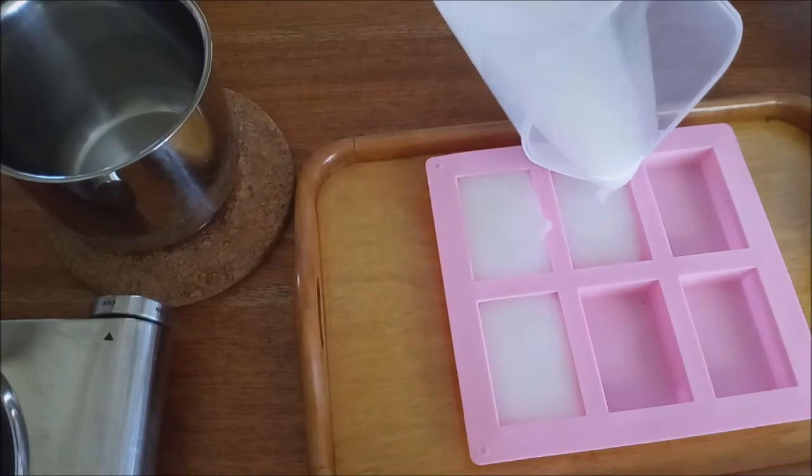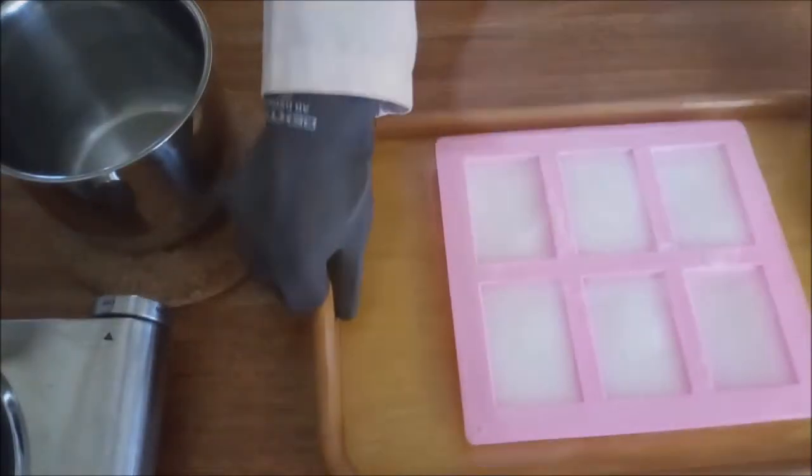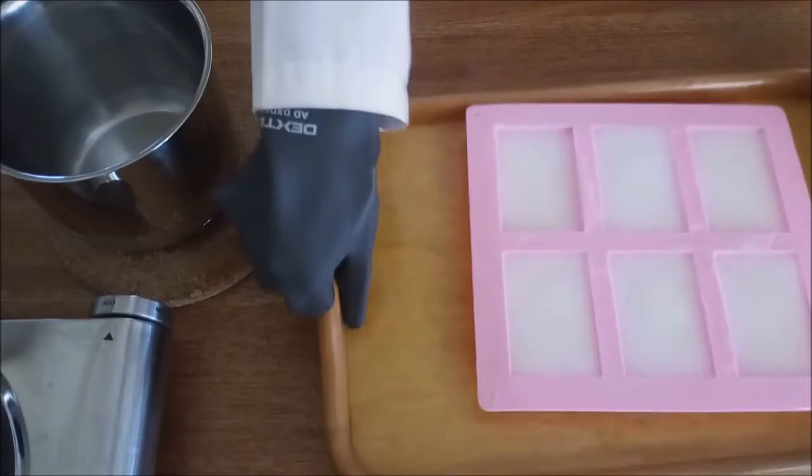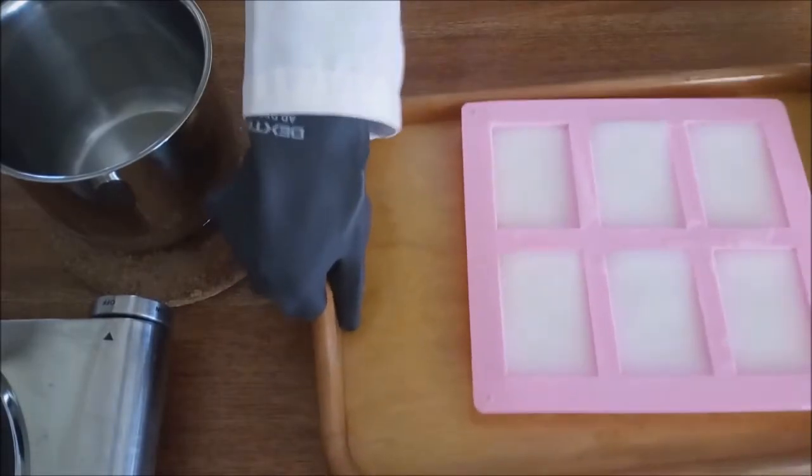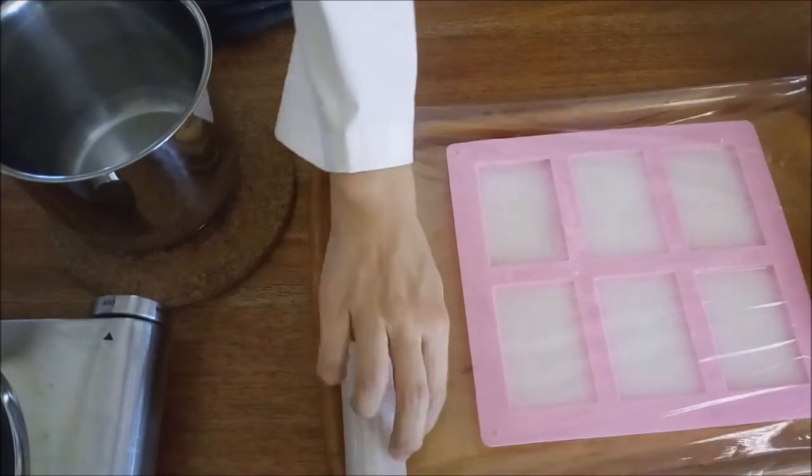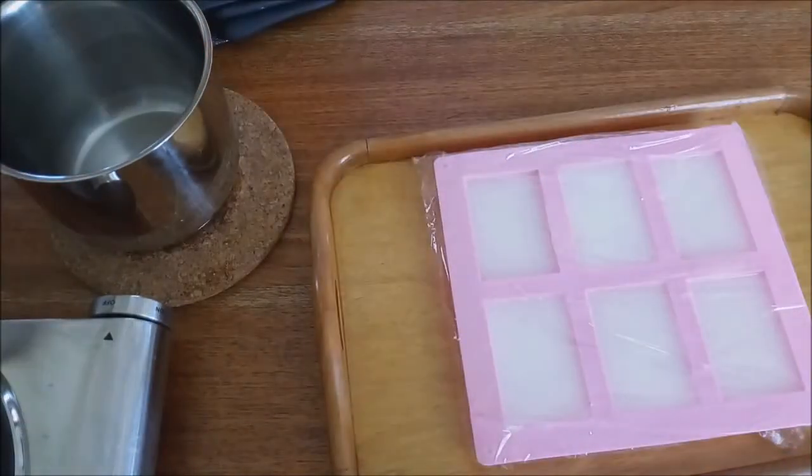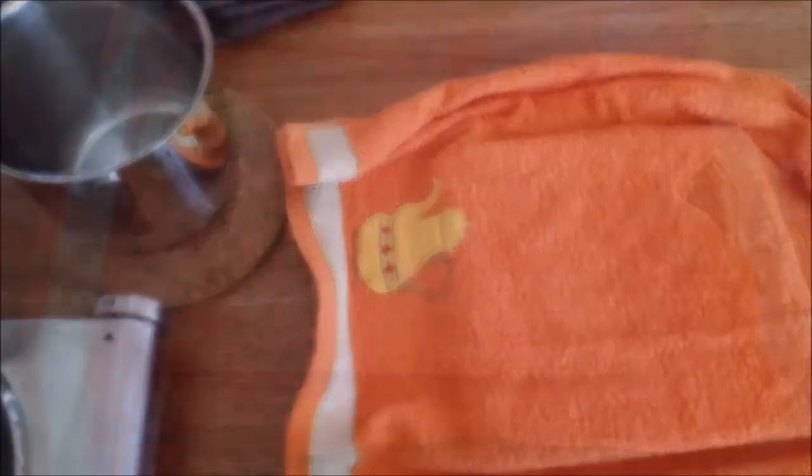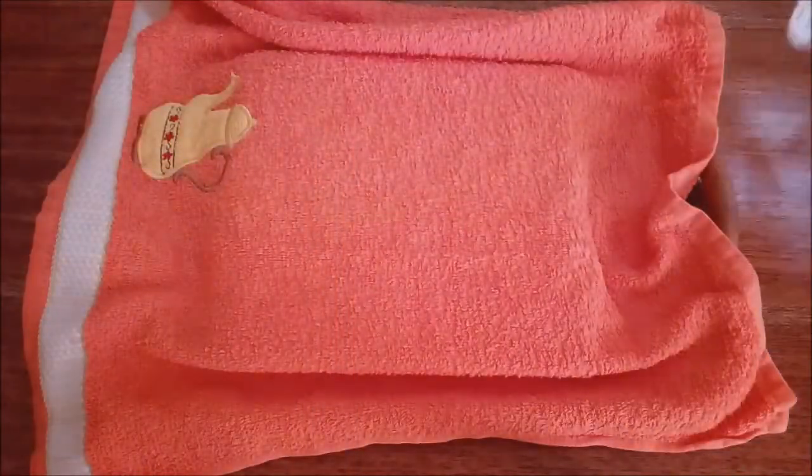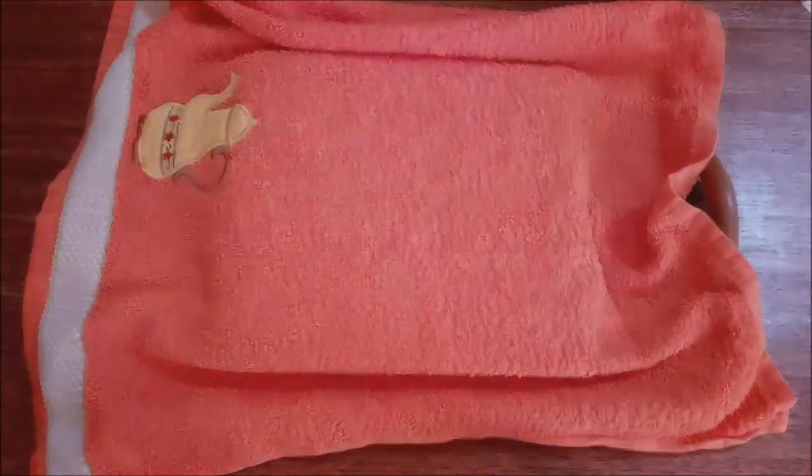Pour the batter into the mold. With the help of the tray, shake the mold to remove air bubbles that may be in the middle of the batter. And cover with cling film and a cloth to help maintain the temperature. Isolate for 4 hours without disturbing until it hardens.